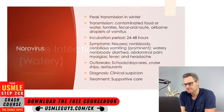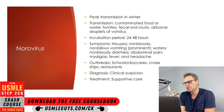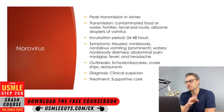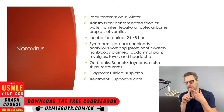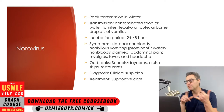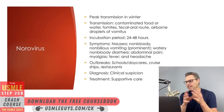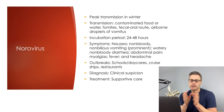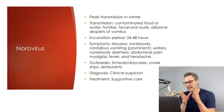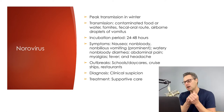First up, we have norovirus. This is a virus that demonstrates seasonal variability, with infections being highest in the winter months. This can be transmitted by contaminated food, water, fomites, fecal orally, as well as via airborne droplets. The incubation period is relatively short, lasting anywhere from one to two days before patients become symptomatic after exposure.